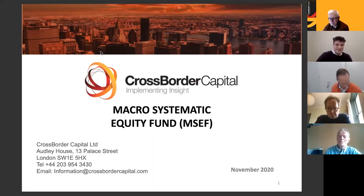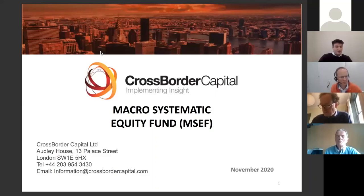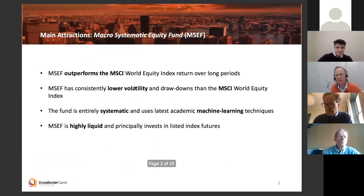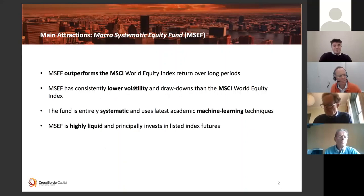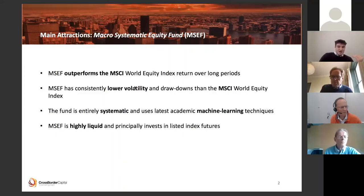Hi, everyone. So this is the macro-systematic equity fund. As Mike's touched upon, this has been in a managed account form for somewhat three years now. We've been running live money and we've got this track record. The fund is officially going to be launched in January. The fund aims to outperform the MSCI World Equity Index over long periods — this is the case over the backtest, both in sample and out of sample. This is the case because we have a rule-based system, meaning the signal has been robust over a long period of time. We've achieved a Sharpe ratio of 1.3 over the last 12 years.